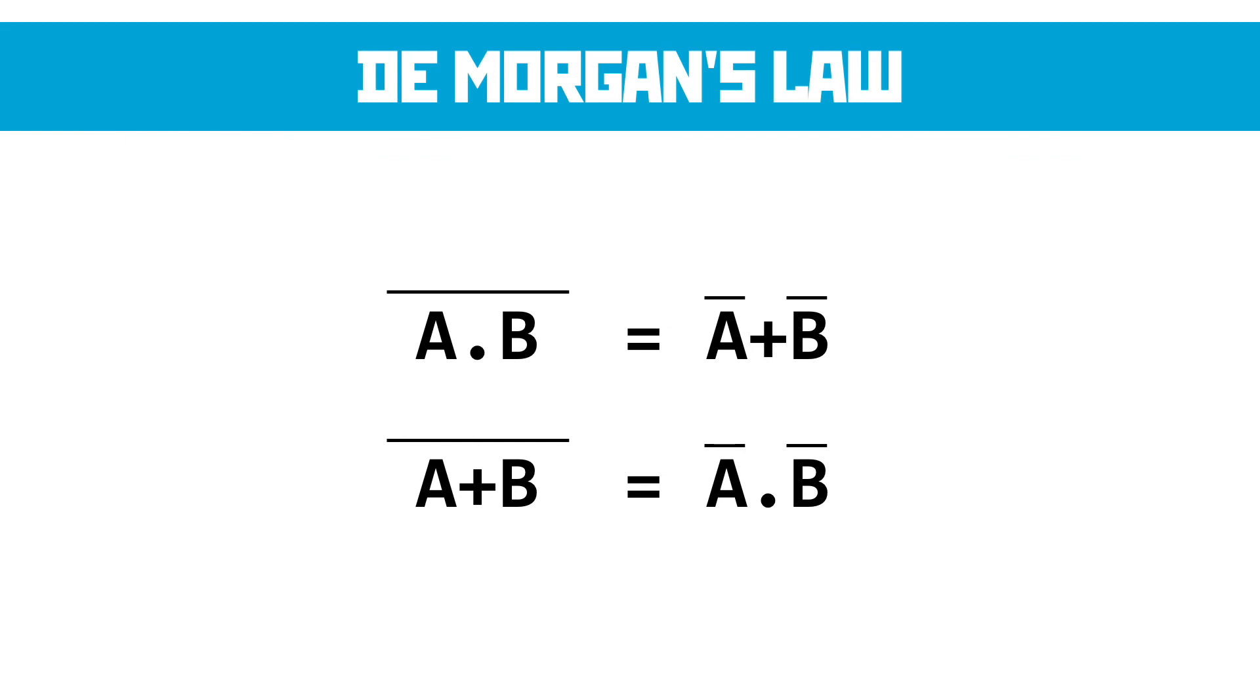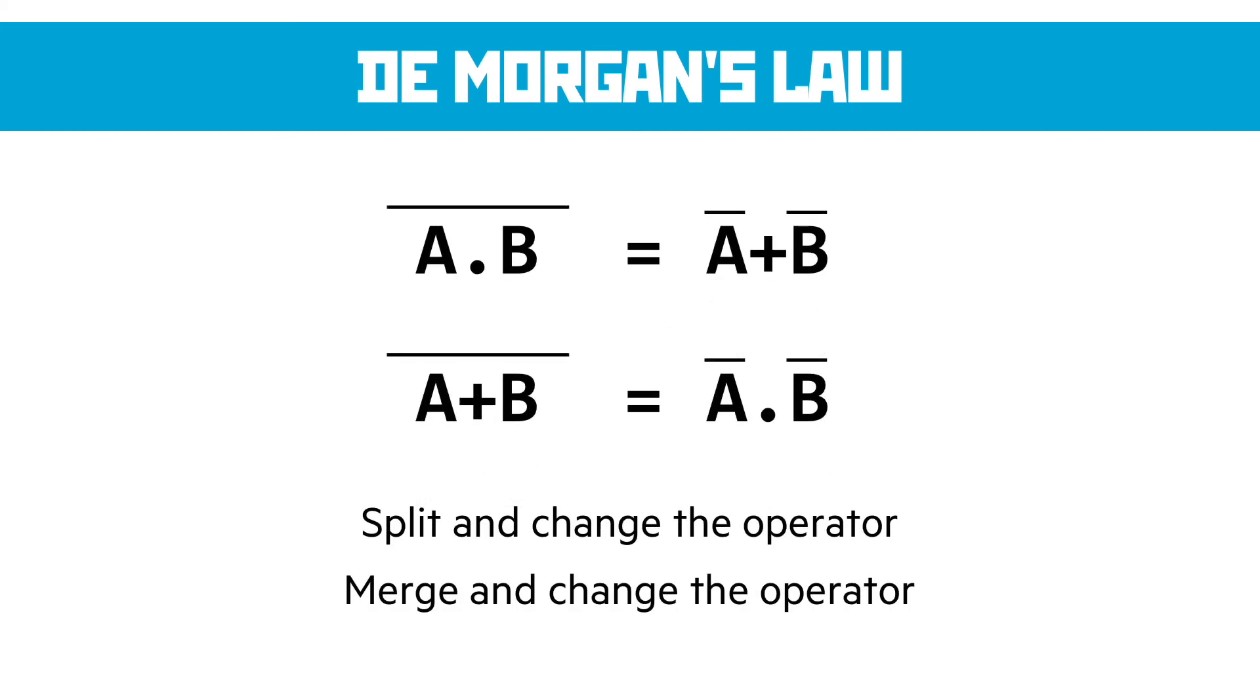The easy way to remember De Morgan's law is that if you're switching between either forms, if you're switching from the conjoined version on the left-hand side, you're going to split and change the operator. If you're going right to left, you're going to merge and change the operator. It's a reasonably simple one to apply and you would add that to the rest of your simplification laws.